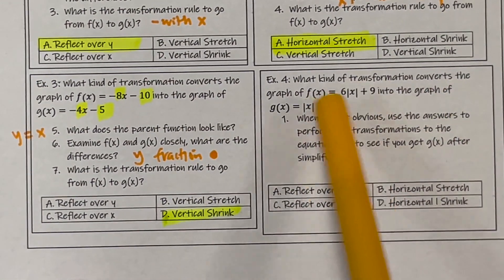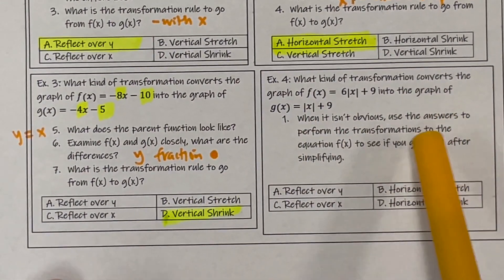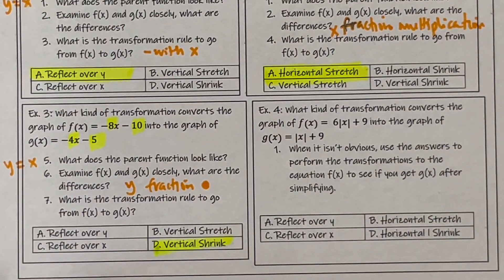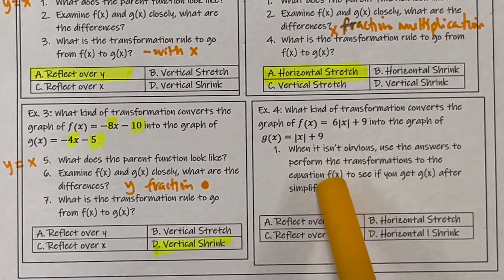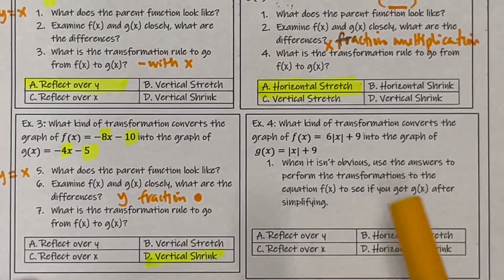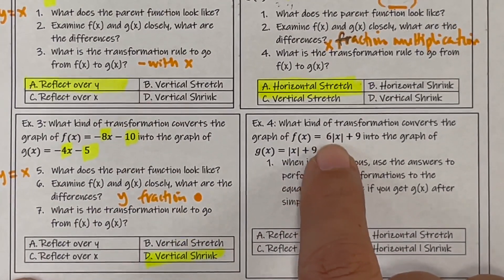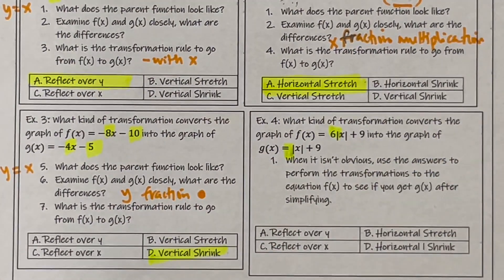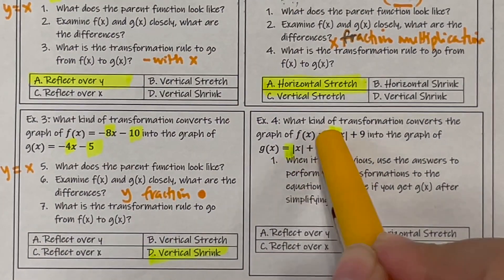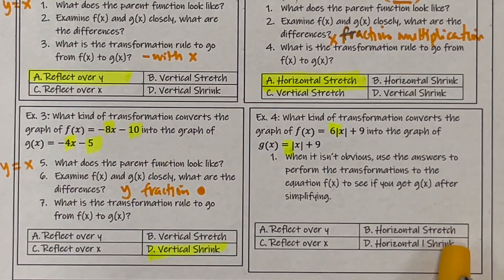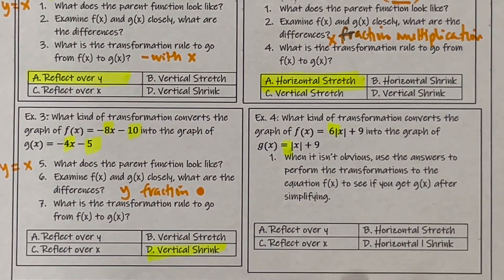Example four: what kind of transformation converts this graph to this? When it's not obvious, use your answer choices to perform the transformations to see if you get what you need. The only difference I'm spotting is that there's a six here and not there. I'd think to multiply by a fraction, and it appears outside my function — but looking at the answer choices, the only stretches and shrinks available are horizontal. It's definitely not a reflection because there are no negatives involved, so it's not C either.